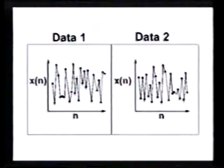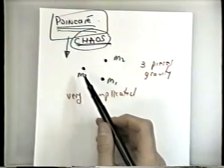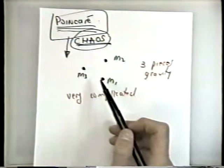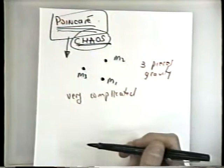In terms of the planets, Poincaré couldn't say anything directly. What he could say was that in principle it was possible that the solar system could be unstable. He didn't specify, given the current configuration, which planets would fly off. More modern work suggests that Pluto and maybe Neptune and some outer planets are most likely to fly off.